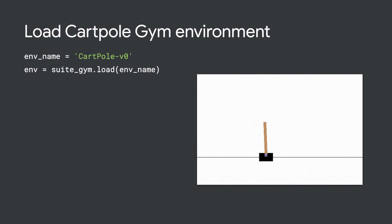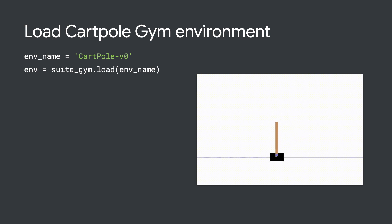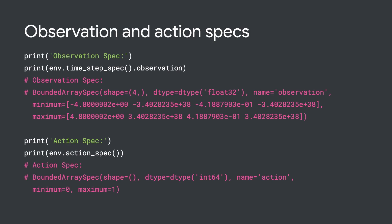Recall that we're trying to keep the pole balanced by moving the cart left or right. The agent receives a reward of positive 1 if the pole remains upright at each time step. It's important to understand the environment specifications, since not all agents are compatible with all environments.